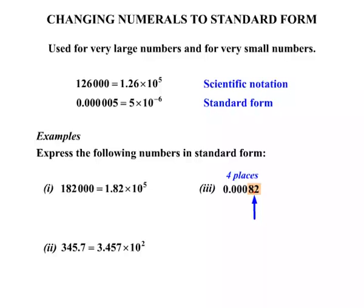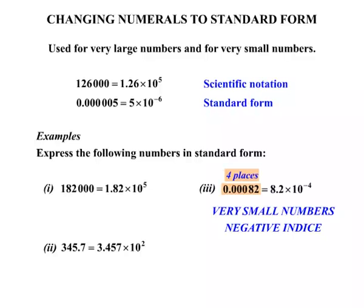And we write that number again, ignoring the zeros, this time in front. So 8.2. And then we write times 10 to the minus 4 this time. Okay, it is 4 places, but for very small numbers—and that is certainly a very small number—we use a negative indice. So that's why we use the minus 4 rather than just the 4.